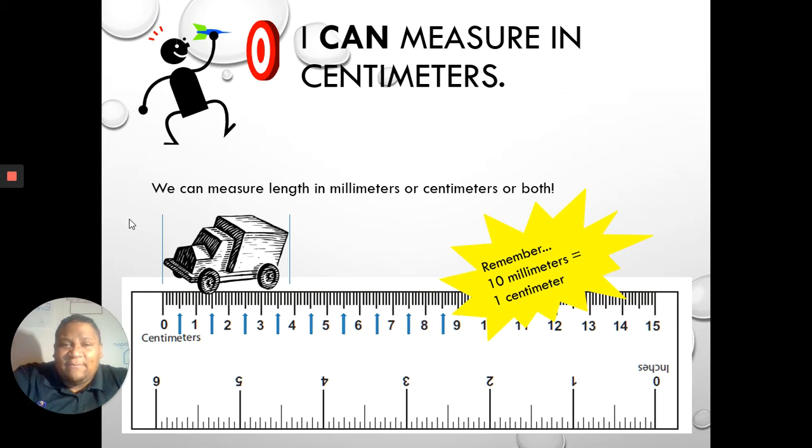So let's look at it. It says we can measure the length in millimeters or centimeters or both, but we're going to focus on centimeters because our I Can statement says I can measure in centimeters. So let's look at this truck, this little wooden truck. You see how we aligned the truck at zero, and then we went all the way over to the four. So we can say that the truck is four centimeters long.